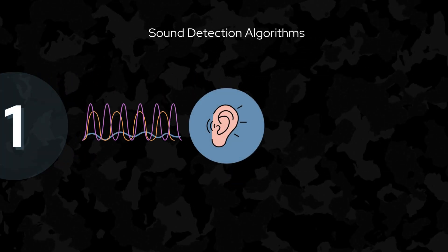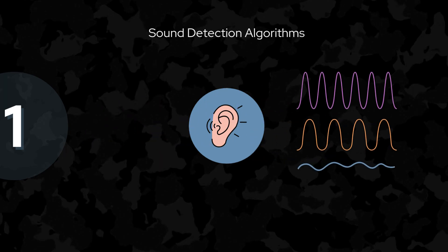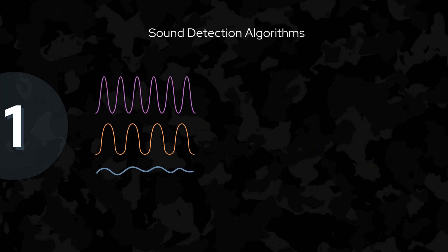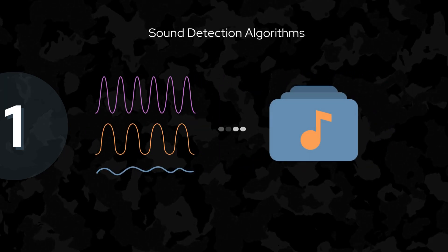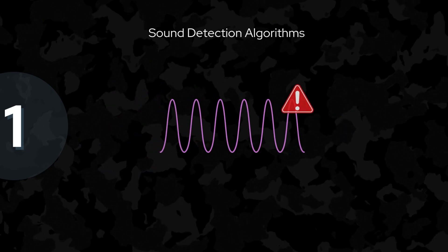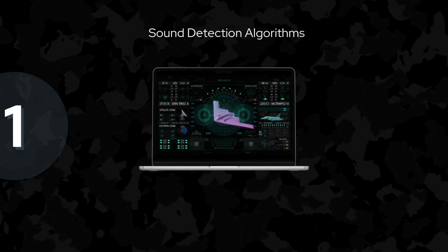Sound detection algorithms function like the human ear, breaking the audio into distinct sounds and comparing them to a library of known drone noises. When a match is found, the system alerts users to the presence of a drone.